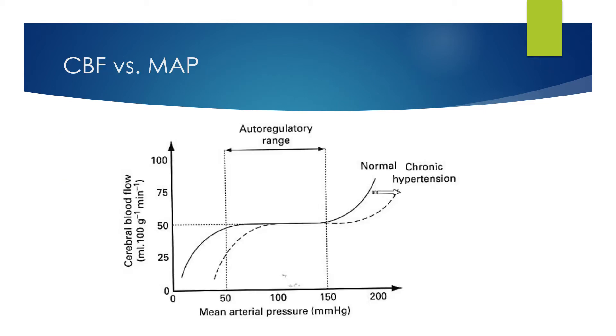If we look at this in graphical form, cerebral blood flow versus mean arterial pressure, you can see the cerebral blood flow is kept constant at approximately 50 mils per 100 grams of brain tissue per minute across a wide range of mean arterial pressure, typically quoted in most books as being between 50 and 150 millimeters of mercury.